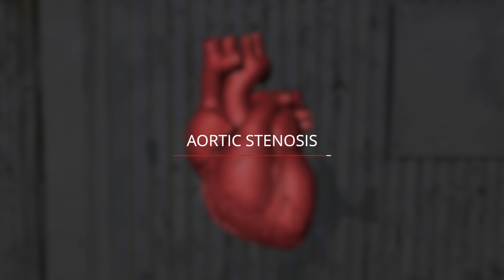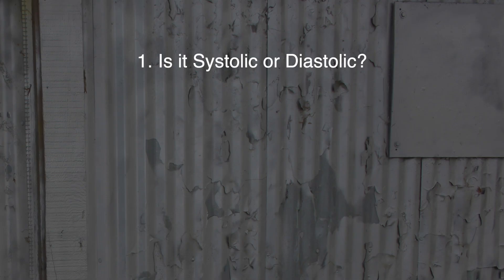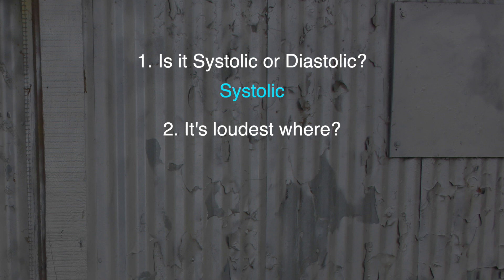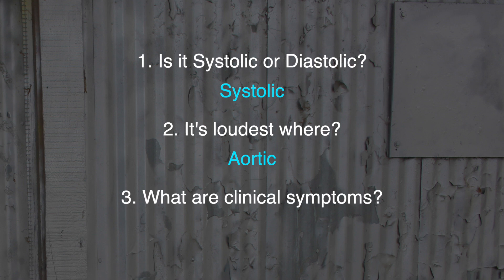Let's listen to aortic stenosis. Ask yourself: is it systolic or diastolic? It's systolic, and it's loudest at the aortic area. It's described as a crescendo-decrescendo systolic ejection murmur. Clinical symptoms can include angina, congestive heart failure, and syncope. Aortic stenosis is usually congenital and can also be caused by rheumatic fever. On physical exam, you will hear the murmur along the right sternal border in the second intercostal space, and peripheral pulses are typically weak. A chest x-ray may show cardiomegaly.